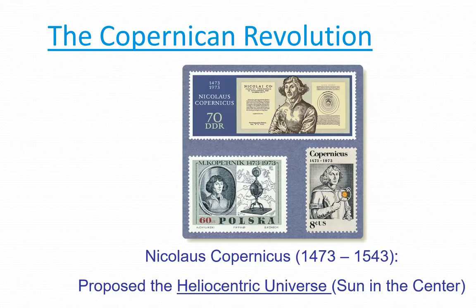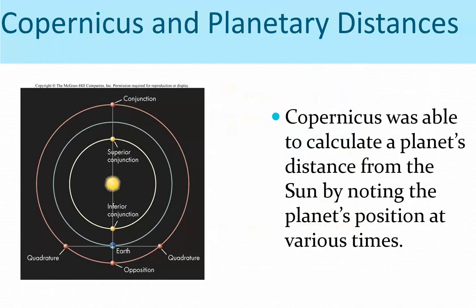Nicholas Copernicus is credited with proposing the heliocentric universe — that the sun is the center. He's not the first person to come up with it, but he was the last one to propose it such that after he did, the idea didn't die and was eventually adopted. It wasn't adopted because of him alone, though. Copernicus did his reasoning using more vocabulary words, which we'll cover now.